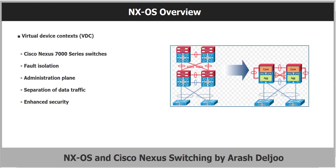Key features and benefits of NXOS include Virtual Device Context, or VDC. Cisco NXOS 7000 series switches can be segmented into virtual devices based on customer requirements. VDCs offer several benefits such as fault isolation, administration plane separation, separation of data traffic, and enhanced security.